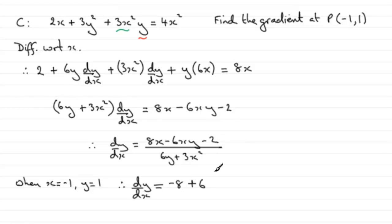Then you've got minus 2 and it's all divided by 6y. So that's going to be 6 times 1, which is 6, and 3x squared. x squared is going to be 1, times it with 3, and you've got plus 3.